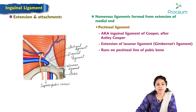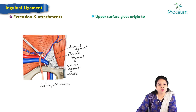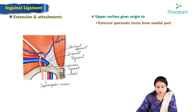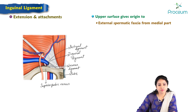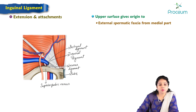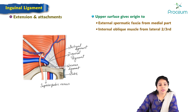The inguinal ligament is a modification of the external oblique aponeurosis. The upper surface of the inguinal ligament gives origin to the external spermatic fascia, which extends into the scrotum around the spermatic cord — not within the inguinal canal, but around the vas deferens. The internal oblique muscle attaches to the lateral two-thirds of the inguinal ligament.